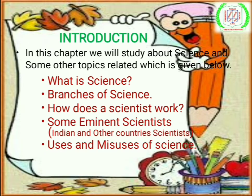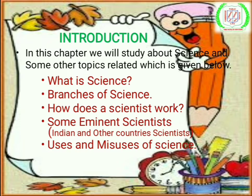In this chapter we will study about: first, what is science; second, branches of science; third, how does a scientist work; fourth, some eminent scientists from India and other countries; and fifth, uses and misuses of science — that is, how science benefits us and how it can be harmful.